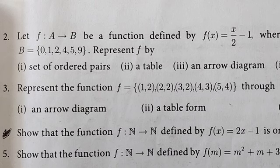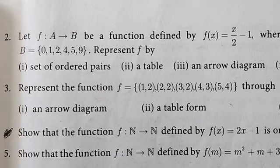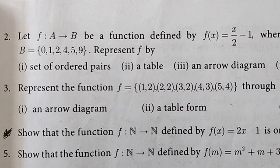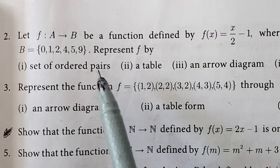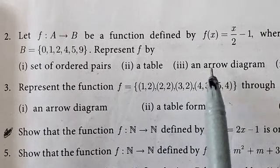Let f be a function from A to B defined by f(x) equal to x by 2 minus 1, where A equal to 2, 4, 6, 10, 12 and B equal to 0, 1, 2, 4, 5, 9. Represent f by set of ordered pairs, a table,